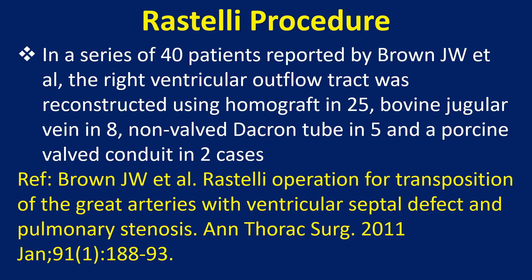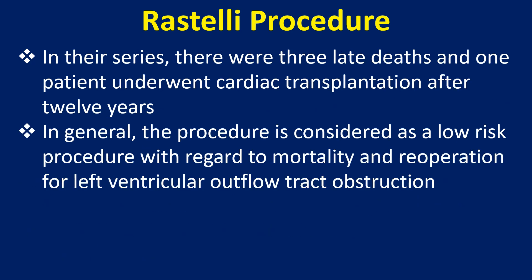In a series of 40 patients reported by Brown and associates, the right ventricular outflow tract was reconstructed using homograft in 25, bovine jugular vein in 8, non-valved Dacron tube in 5, and a porcine-valved conduit in 2 cases. In their series, there were 3 late deaths and one patient underwent cardiac transplantation after 12 years.